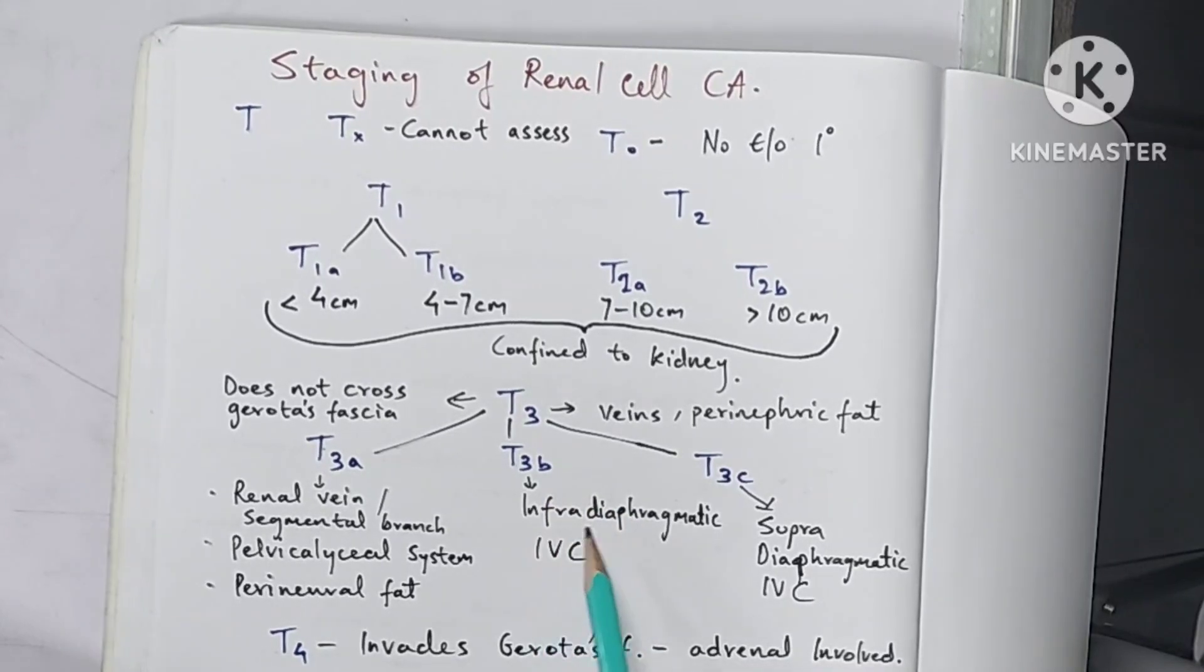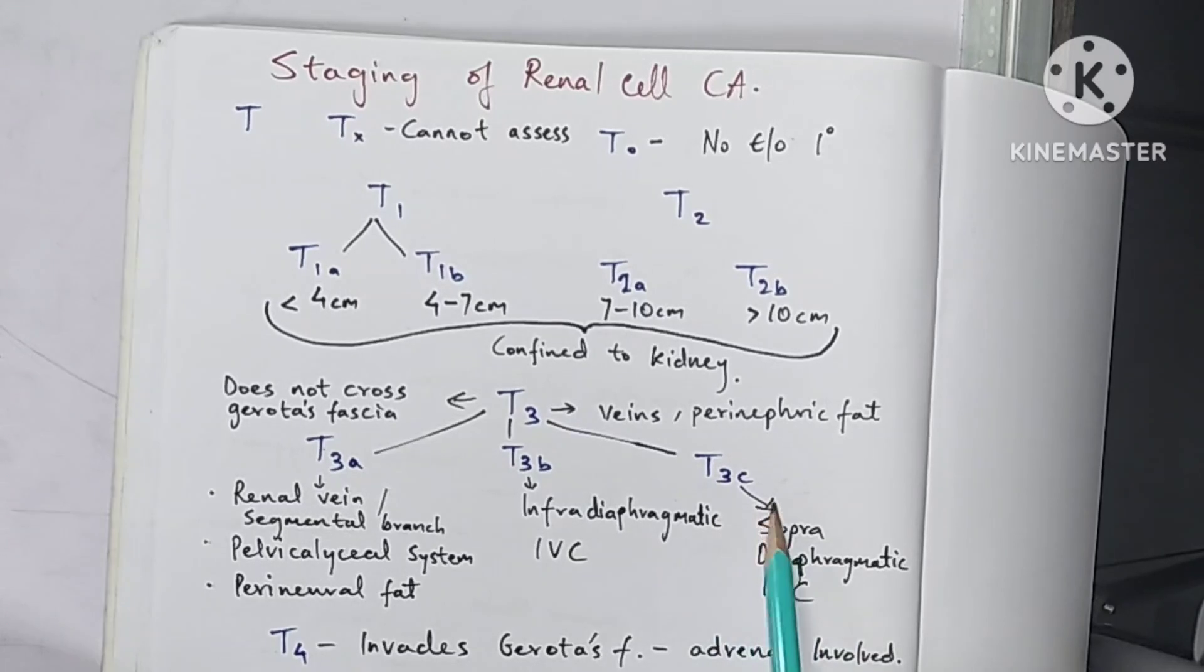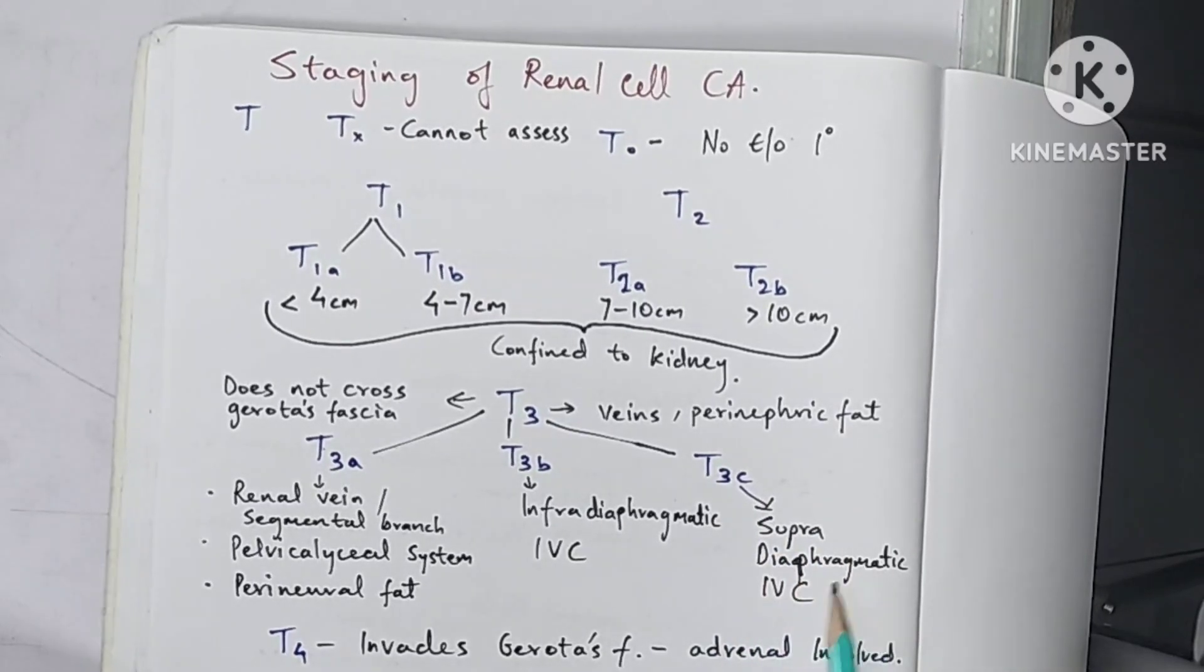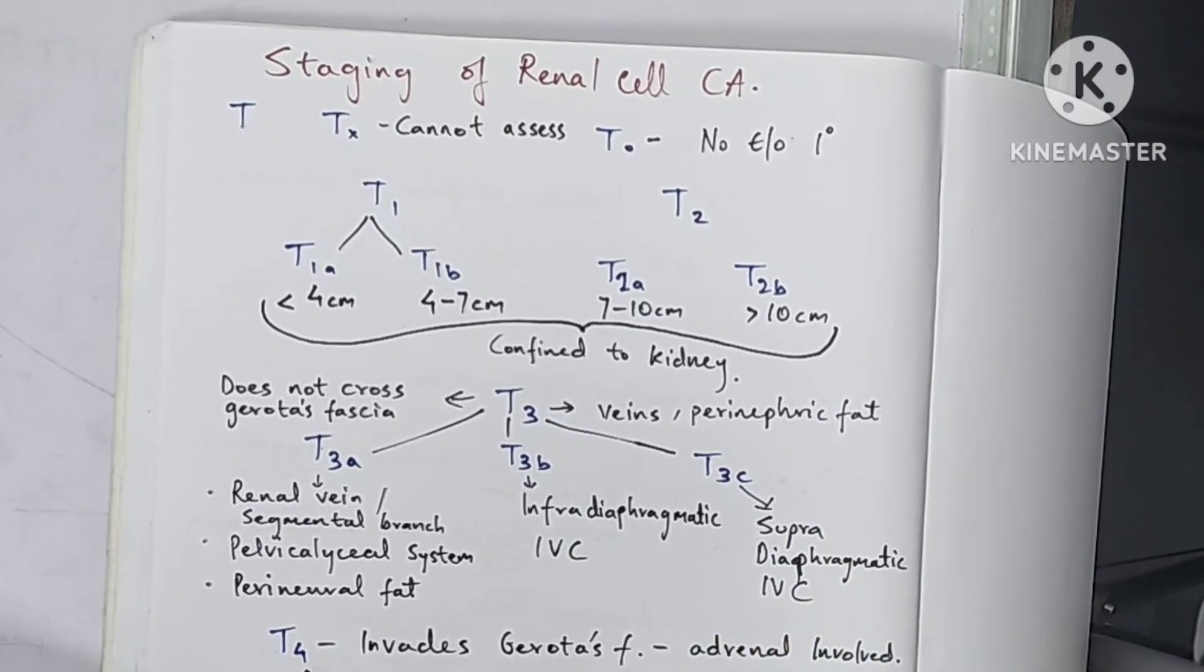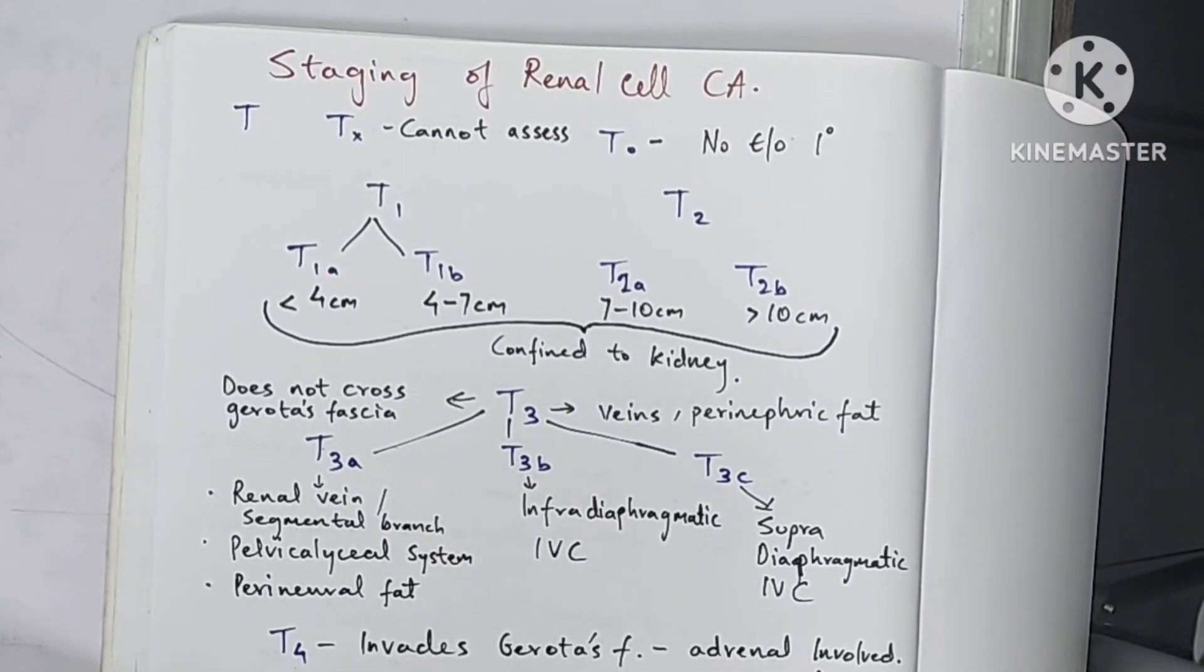T3b when there is infra-diaphragmatic IVC involvement. Then T3c when there is supra-diaphragmatic IVC involvement. T4 when there is invasion of gerota's fascia. It can also involve adrenal gland.